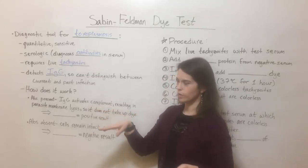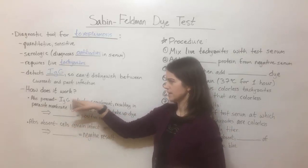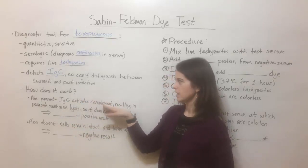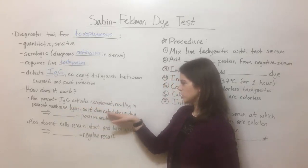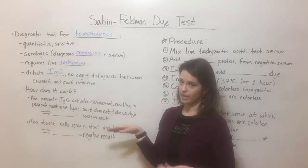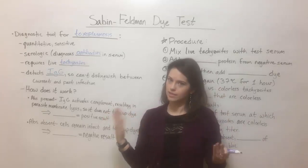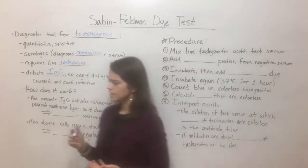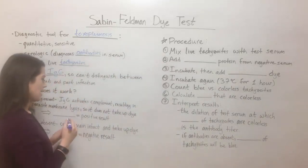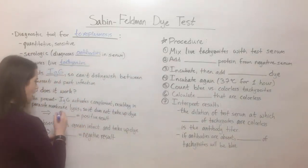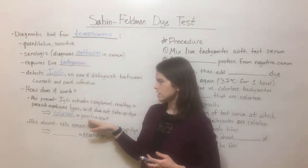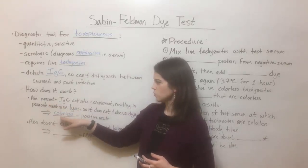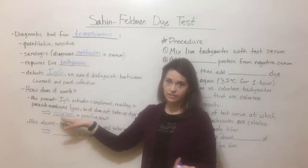This is the critical part: because the antibodies are present to direct complement to lyse the membrane, that parasite does not take up the dye in the test, because it has holes in its membrane and the dye leaks back out. This leaves the tachyzoites thin — because they've been lysed and are dead — and also colorless. This is considered a positive result, because the antibodies were present and that is why the tachyzoites are dead and therefore colorless.